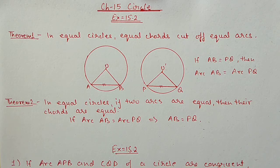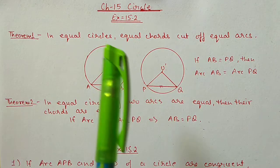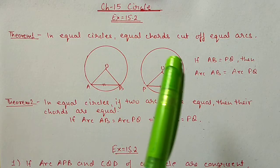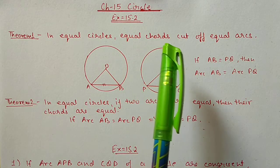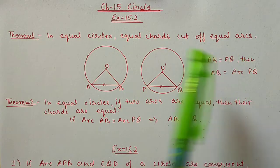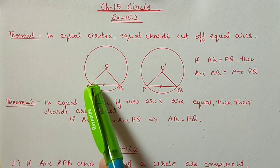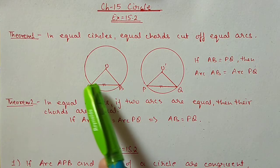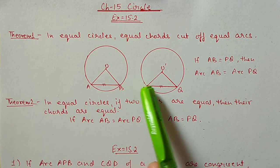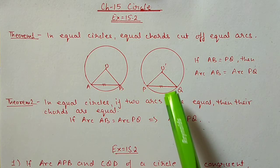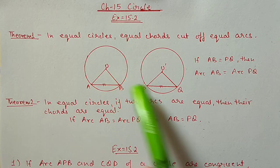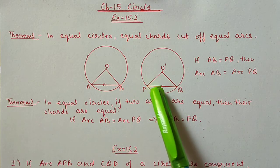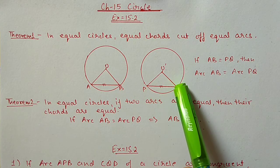So we have two theorems here. First theorem: in equal circles or in the same circle, equal chords cut off equal arcs. It means if two chords AB and PQ are equal, then arc AB will be equal to arc PQ.